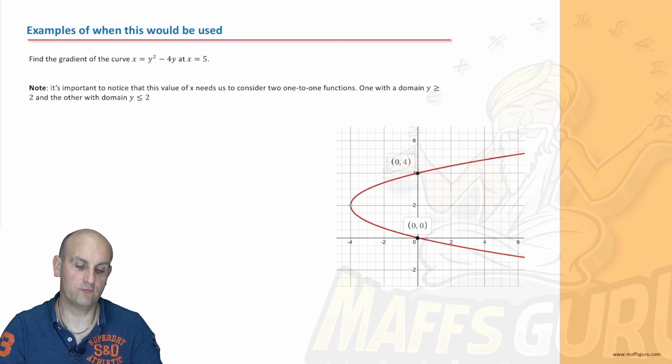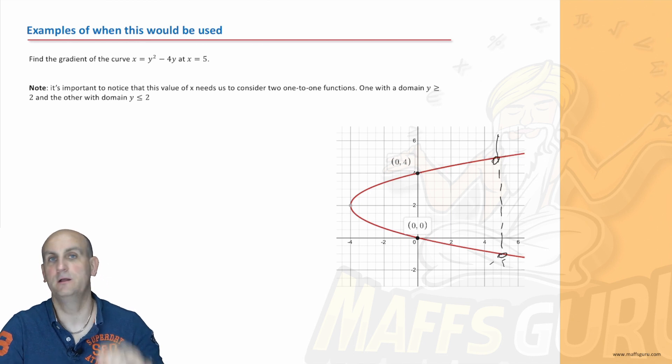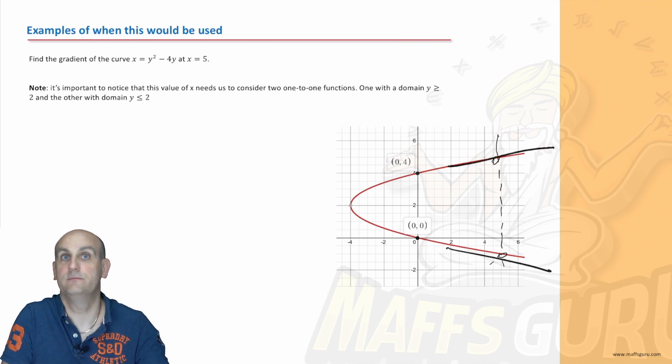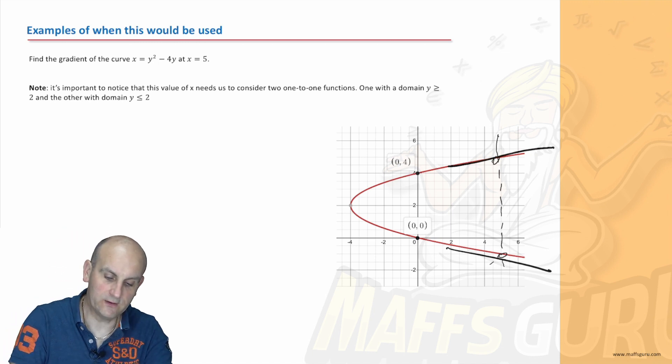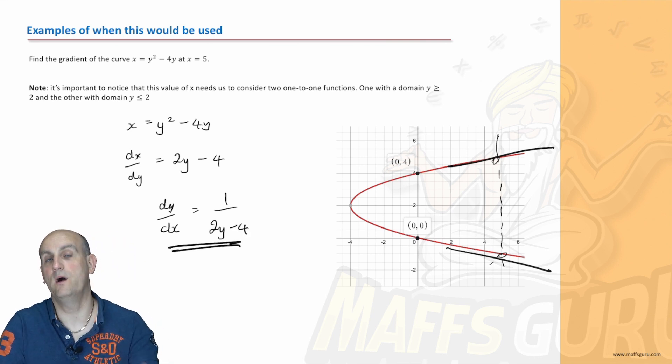What about this one here? Find the gradient of the graph when x equals 5. Uh-oh. Bit of a problem now, x equals 5. Now, notice there they're trying to trick us. They've given us an x value, which means we're actually going to end up with 2y values. So I'm going to need to find the value of the gradient there and the gradient there. Okay, we can do that. So we've already started with x is equal to y squared minus 4y. Same one we did before. Dx by dy is equal to 2y minus 4. Or dy by dx is equal to 1 on 2y minus 4. Okie dokie. We can use that. So now what I need to do is find my y values. I can't substitute x values in here. I need to find my y values.